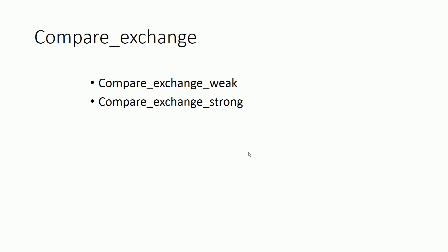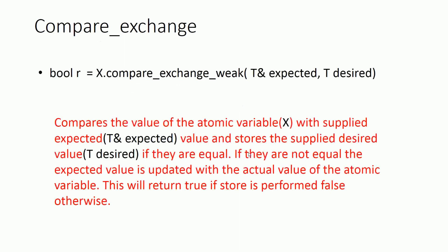There are two compare exchange functions: compare_exchange_weak and compare_exchange_strong. We will discuss the difference between these two later in this video, but for now consider both to be the same. Both compare exchange operations will compare the value of the atomic variable with the supplied expected value. If they are the same, it will store the supplied desired value to the atomic variable. If the atomic variable and the expected value are not equal, the expected value will be updated with the actual value of the variable. This compare exchange function will return true if the store to the atomic variable is performed successfully; otherwise it will return false.